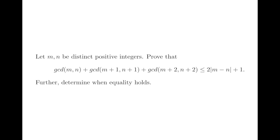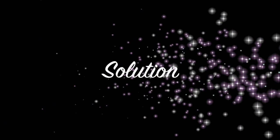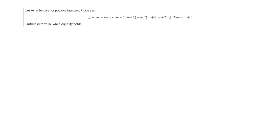The problem is not difficult. We can solve it by applying simple manipulations on the GCDs. So let's start assuming that m is strictly larger than n. Then we can write down the GCD between m and n is equal to the GCD between m and n minus n.